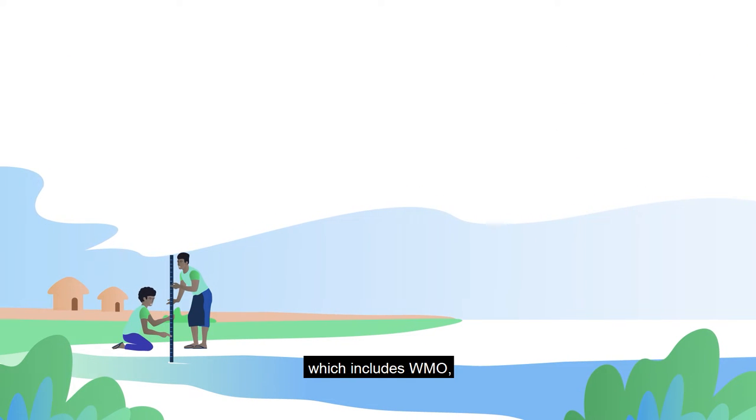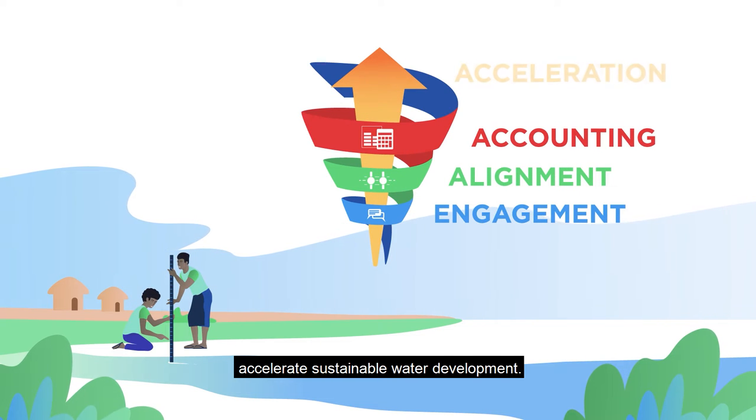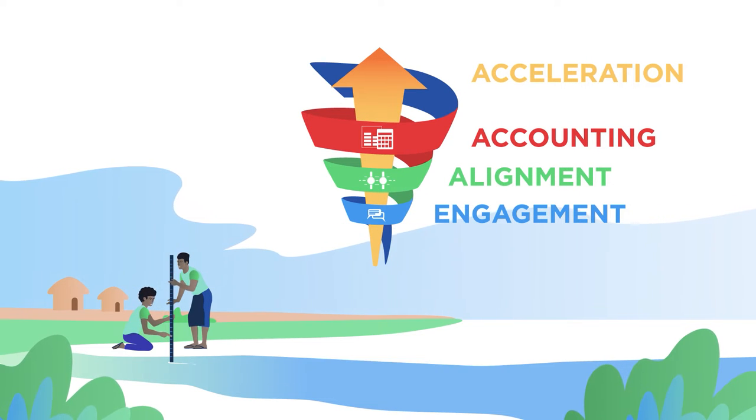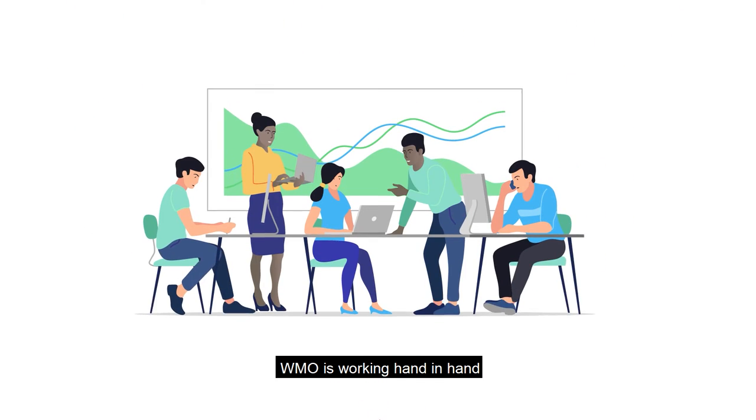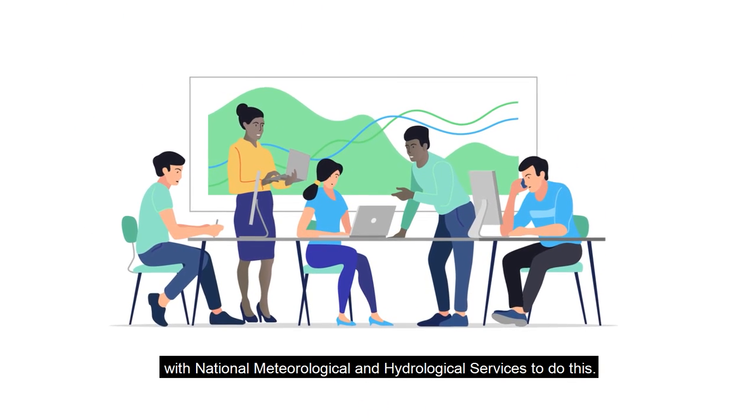A water and climate coalition, which includes WMO, is taking steps to ensure countries are able to accelerate sustainable water development. WMO is working hand in hand with national meteorological and hydrological services to do this.